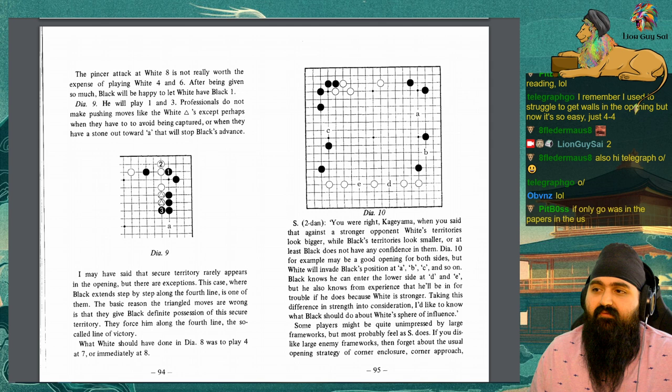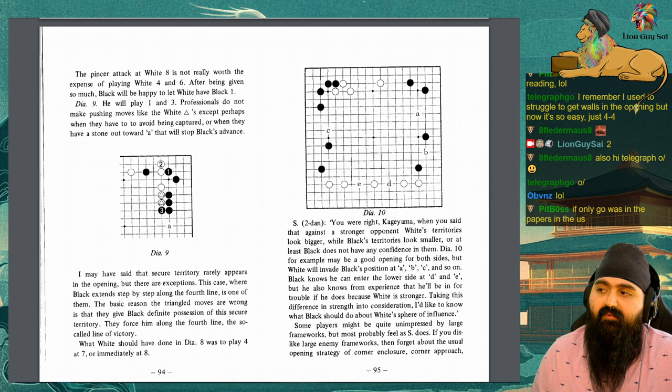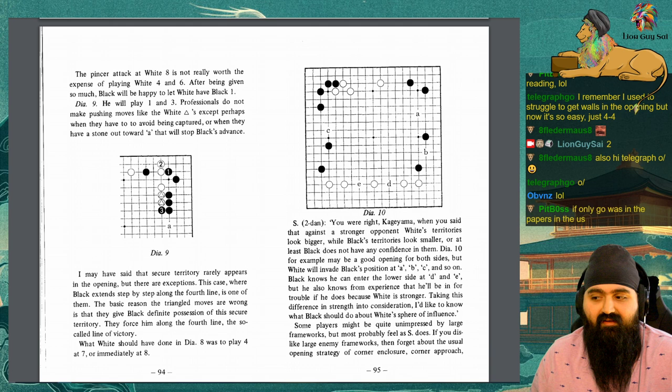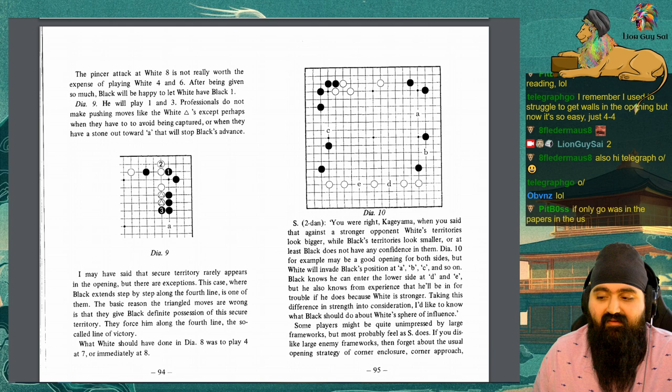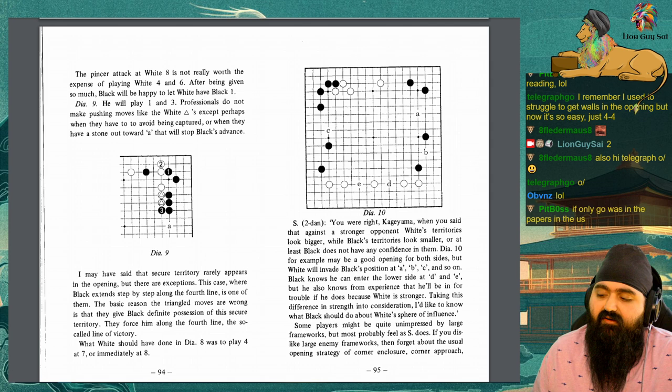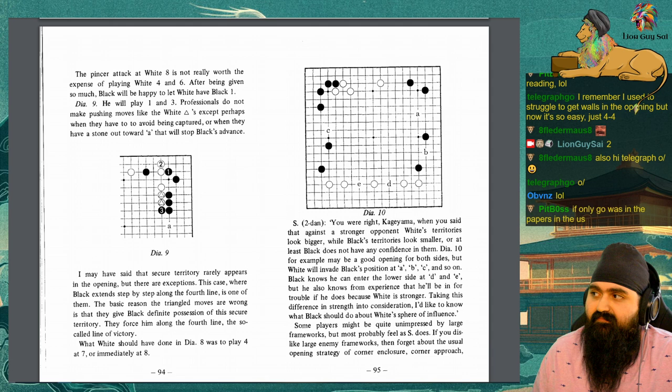Diagram 9. He will play 1 and 3. Professionals do not make pushing moves like white's triangle stones except perhaps when they have to avoid being captured or when they have a stone out towards A that will stop black's advance. I may have said that secure territory rarely happens in the opening, but there are exceptions. This case, where black extends step by step along the fourth line, is one of them. The basic reason the triangle moves are wrong is that they give black definite position of the secure territory. They force him along the fourth line, the so-called line of victory.